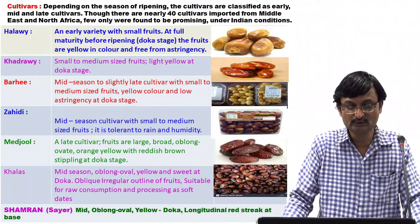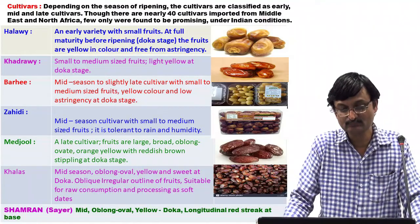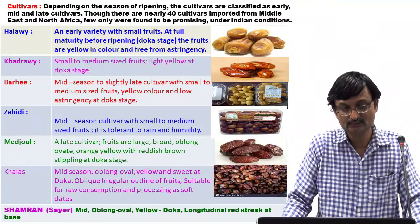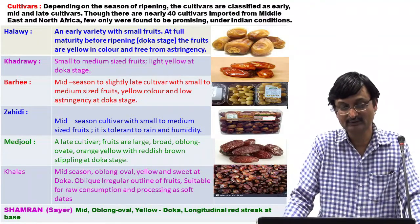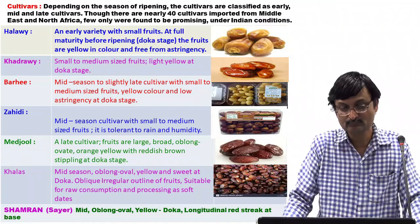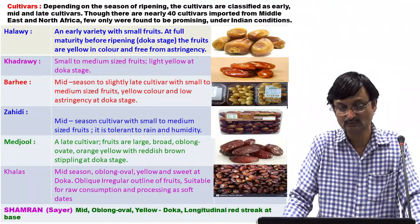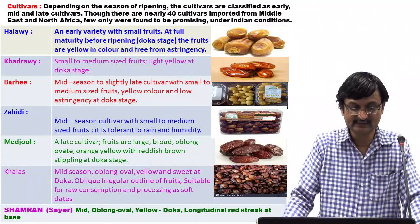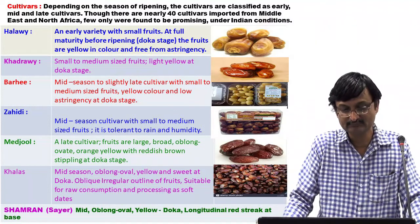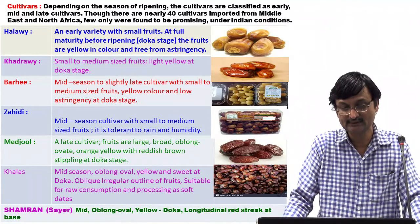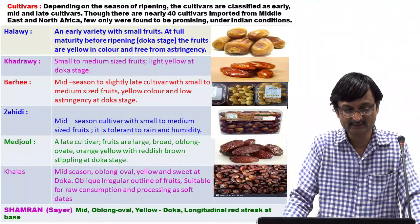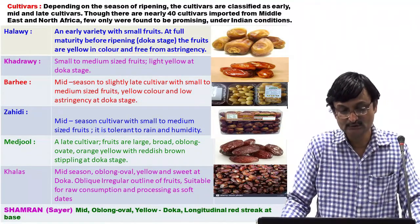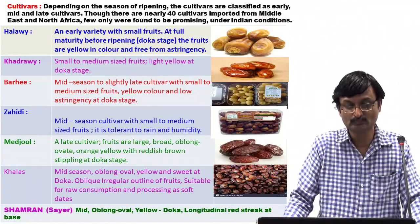2. Kadravi — small to medium sized fruits, light yellow at Doka stage. 3. Burhi — mid season to slightly late cultivar with small to medium sized fruits; it is tolerant to rain and humidity. 4. Medjul — a late cultivar with large, broad, oblong fruits.